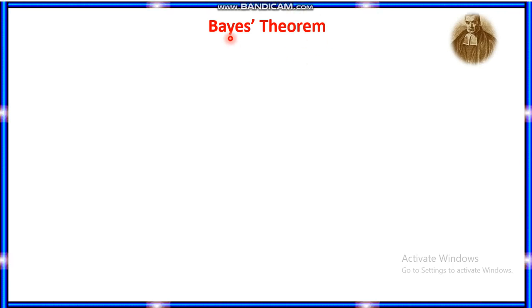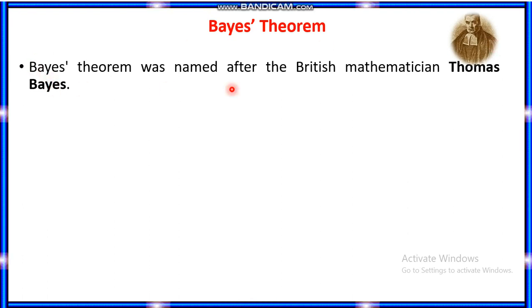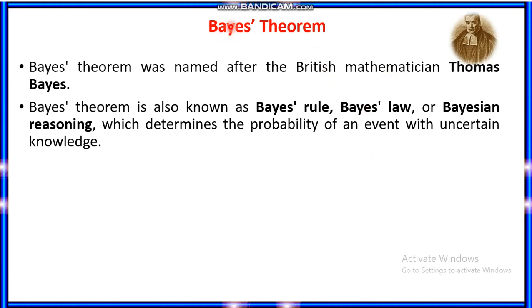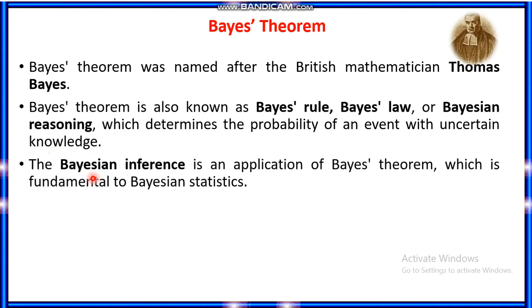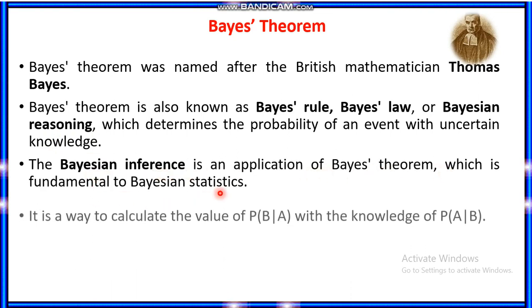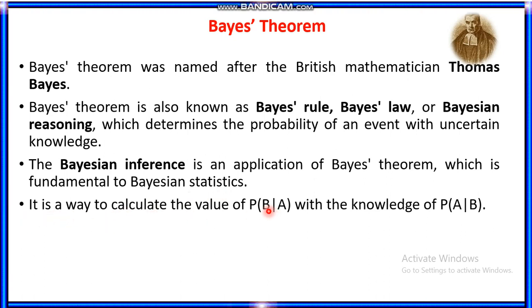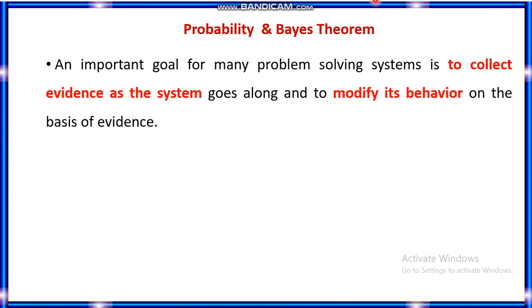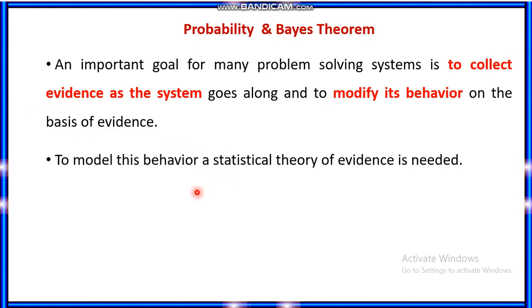Next comes the most important concept: Bayes theorem. Thomas Bayes was a British mathematician who derived this theorem. It is also known as Bayes rule, Bayes law, or Bayesian reasoning, which determines the probability of an event with uncertain knowledge. Bayesian inference is an application of Bayes theorem which is fundamental to Bayesian statistics. It is a way to calculate P(B|A), the conditional probability of A, with the knowledge of P(A|B), the conditional probability of B. It allows updating the probability prediction of an event by observing new information from the real world. An important goal for many problem-solving systems is to collect evidence as the system goes along and modify its behavior on the basis of that evidence. To model this behavior, a statistical theory of evidence is needed — that is where Bayesian statistics comes in.